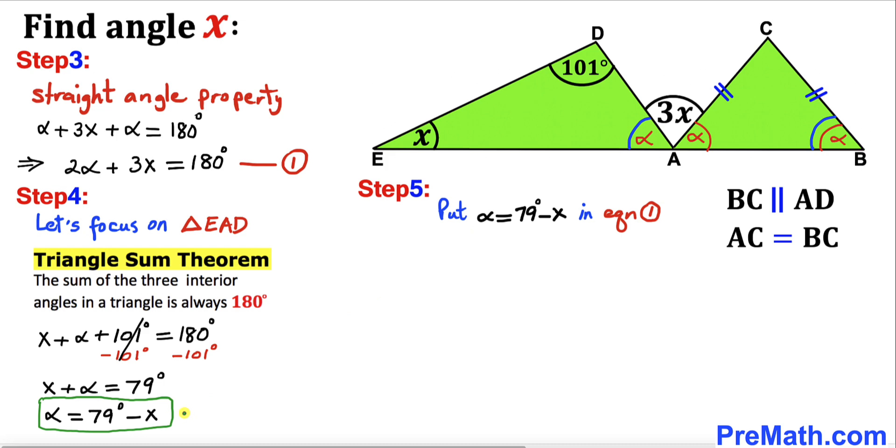Here's our equation one. Let's replace alpha by 79 degrees minus x, so 2 times 79 degrees minus x plus 3x equals 180 degrees.